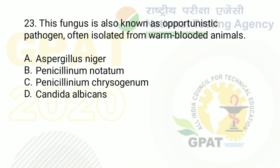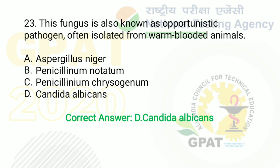Question number 23: this fungi is also known as an opportunistic pathogen often isolated from warm-blooded animals. Option A: Aspergillus niger. Option B: Penicillium notatum. Option C: Penicillium chrysogenum. Option D: Candida albicans. The right answer is option D — Candida albicans.